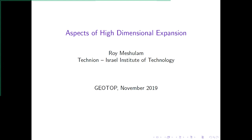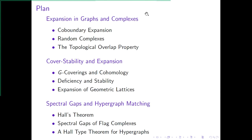I'll talk about some aspects of high dimensional expansion. This is a fairly new field that lies at the intersection of combinatorics and topology, with some connections to algebra, number theory, representation theory, and probability — and as such I think it would be of some interest to applied topologists also. The plan is as follows: I'll first recall the notion of expansion in graphs and then generalize it to the co-boundary expansion of simplicial complexes. This notion arose in two different applications — one to random complexes and the other to the topological overlap property. I will give hints about these two applications.